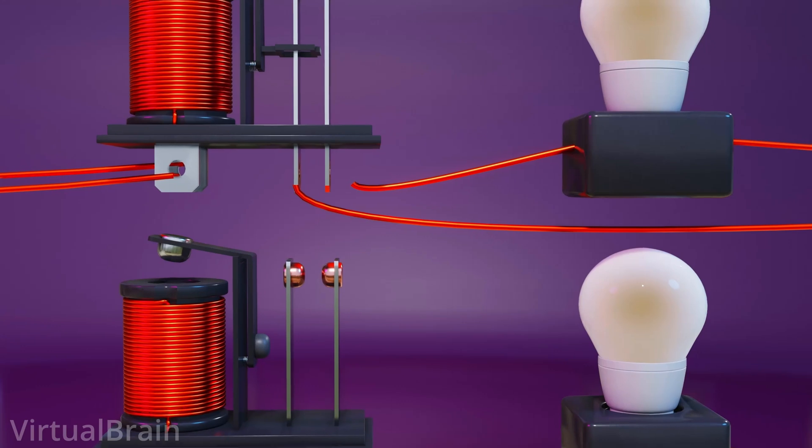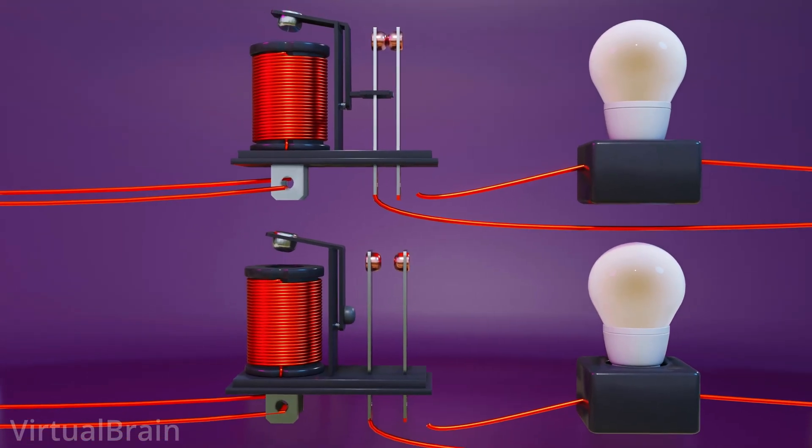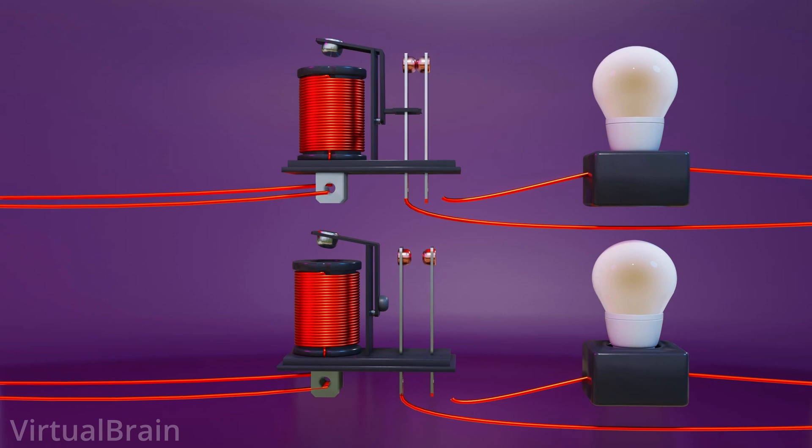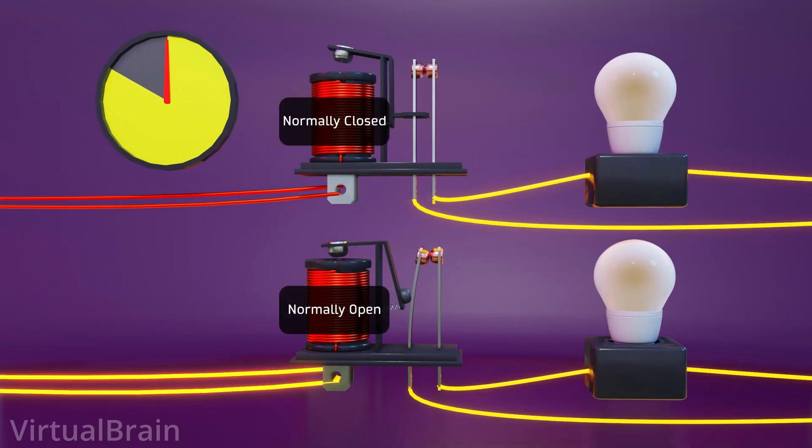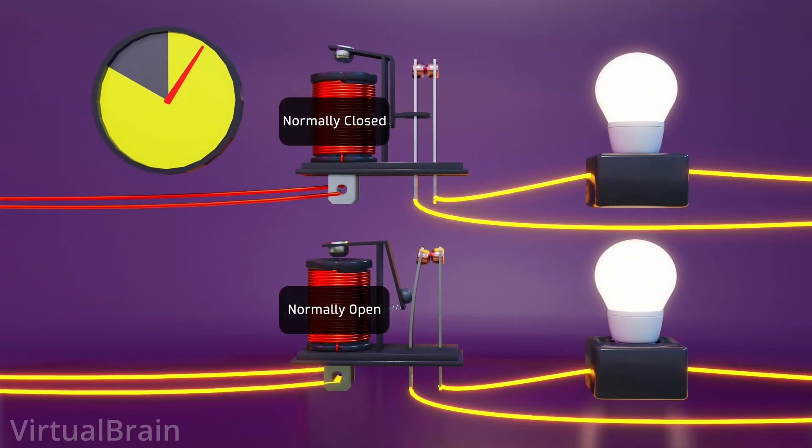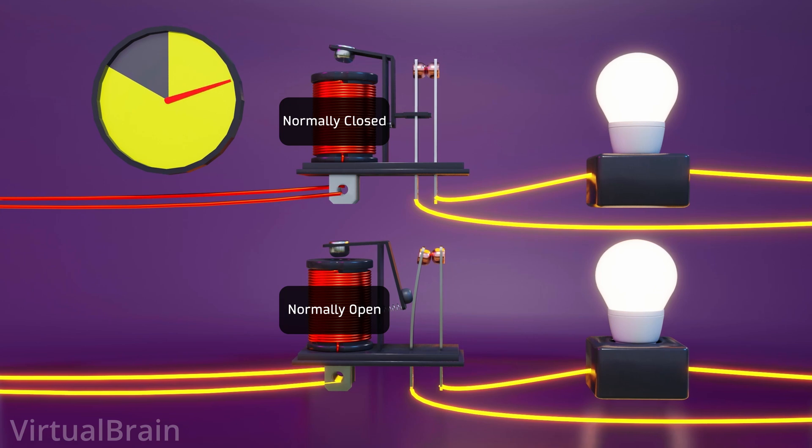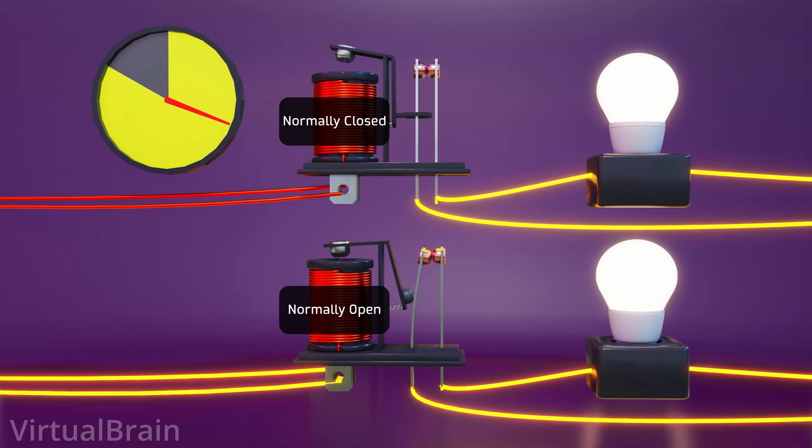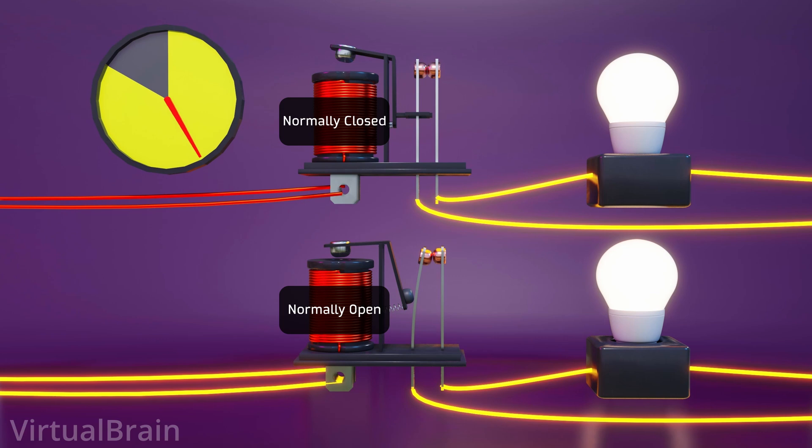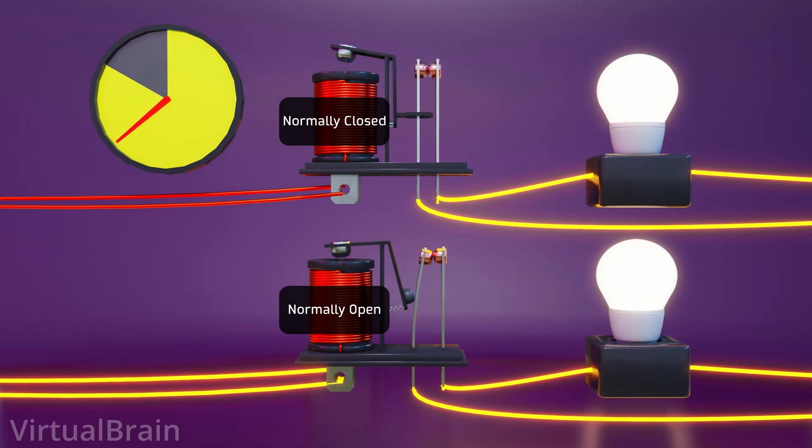In addition to this, in other contexts, the choice between a normally open or normally closed relay can have energy implications. For example, if we want to control a lamp that we want to keep on for 20 hours and off for 4 hours, then it would be better to use a normally closed relay, as we would only need to keep the relay energized for 4 hours, as opposed to a normally open relay, which would need to be energized for 20 hours.